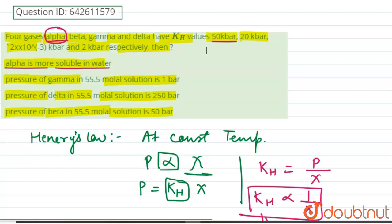So we can say that the solubility of alpha should be less, and the option given is alpha is more soluble in water. So according to Henry's law, the first option is incorrect.